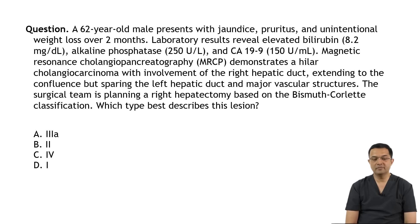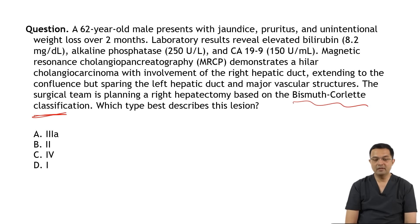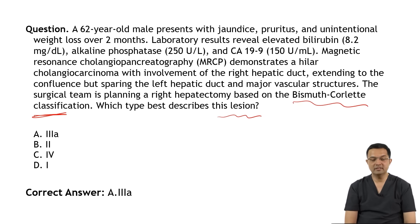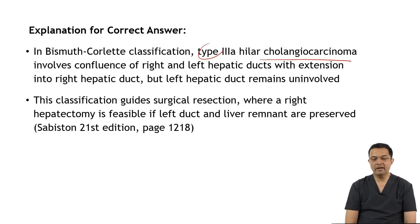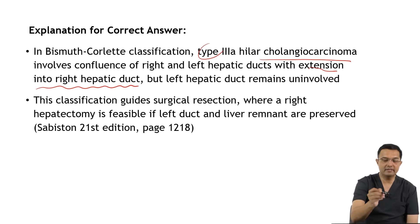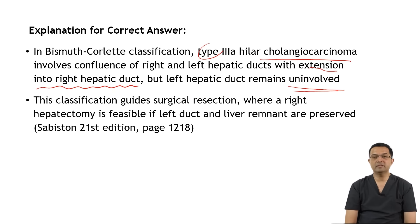The surgical team is planning right hepatectomy. Based on the Bismuth-Corlette classification, which type best describes this lesion? The options are 3a, 2, 4, and 1. The correct answer is type 3a. In Bismuth-Corlette classification, type 3a involves confluence of right and left hepatic duct with extension into the right hepatic duct, but the left hepatic duct remains uninvolved.